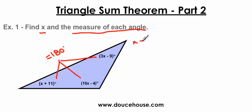I'm going to add up all the angles. So x plus 11 plus 3x minus 9 plus 10x minus 4. All of these angles equal 180 degrees.